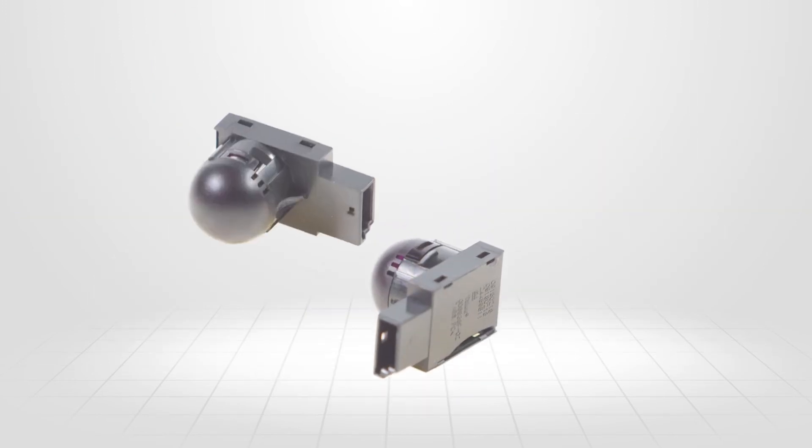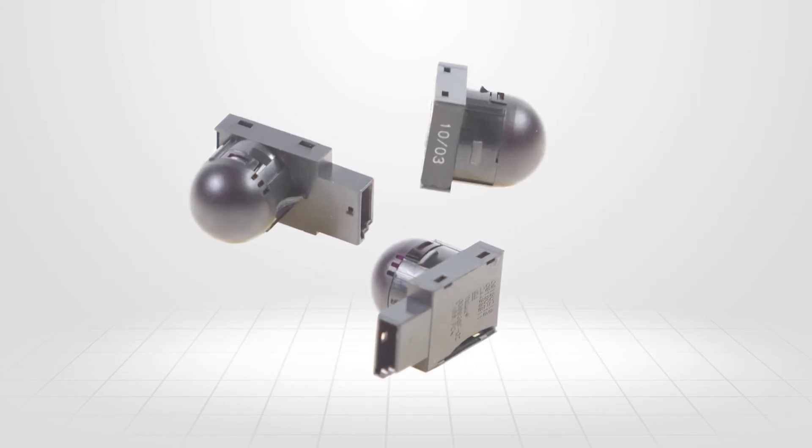Newer sun load sensors incorporate two photodiodes and a temperature sensor. One diode for determining the sunlight strength and the other the sun's azimuth.